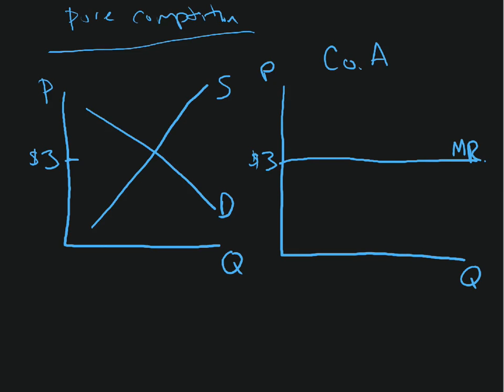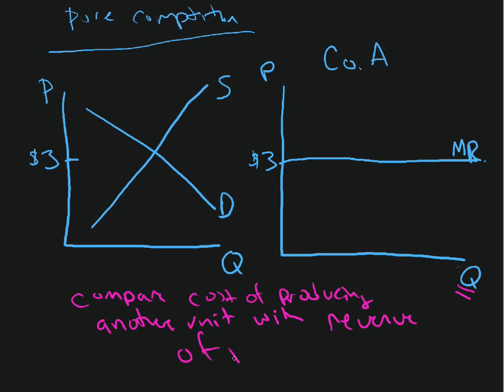That's what we did last time. What we're going to now consider is how might we think about this company deciding what quantity they should produce, how much stuff they should produce. And what they do is compare the cost of producing another unit with the revenue of producing another unit.